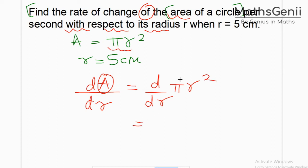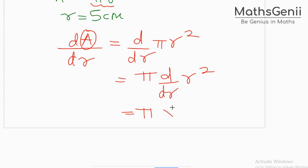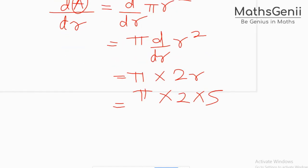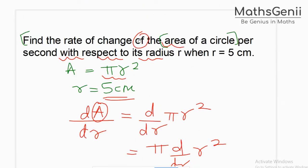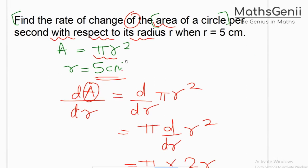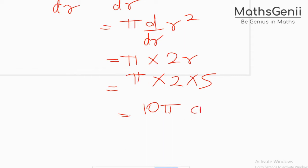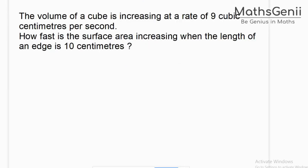With respect to r, anything other than r is a constant, so pi is constant. The derivative of r squared is 2r. So dA/dr equals 2πr. This is the rate of change of area with respect to radius. The question gives r equals 5 cm, so substituting: the answer is 10π centimeters squared per centimeter. That is the unit.